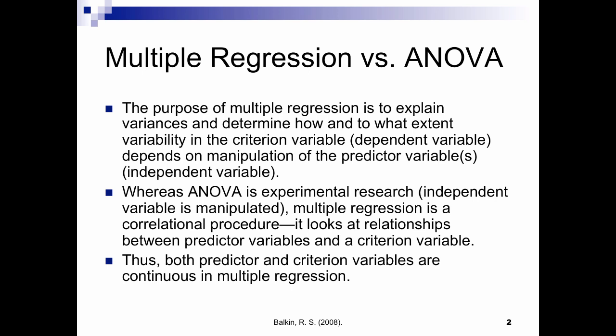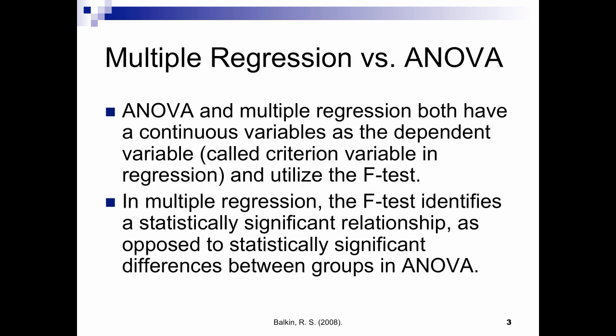What's different here is that everything is continuous. Just like in ANOVA, we have a continuous dependent variable. But in ANOVA, we're trying to either manipulate or describe differences among groups. However, in regression, everything is continuous, so we're trying to look at continuous predictor variables and see how they relate to the continuous criterion variable. So if we have a significant F-test, then we're saying that there is a statistically significant relationship between our predictor variable or variables and our criterion variable.